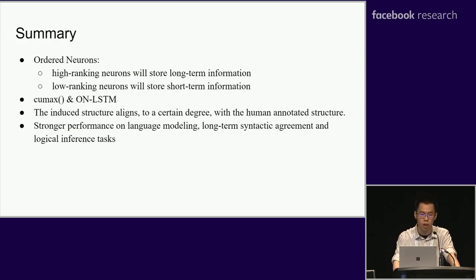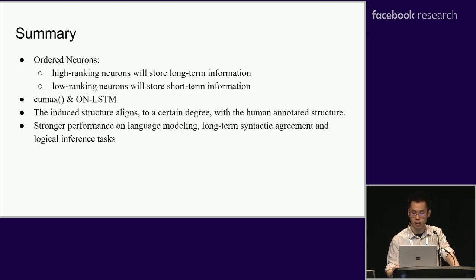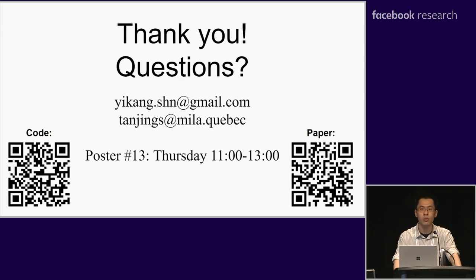To summarize our work: we propose a new order neuron inductive bias such that higher-rank neurons store longer-term information and lower-rank neurons store shorter-term information. To achieve this, we propose a new activation function Cumax and a new recurrent model, ON-LSTM. Experiment results show that the latent structure induced by our model aligns with human expert annotation, and the model achieves stronger performance on downstream tasks given those induced latent structures. Thanks for listening, and please visit our poster if you're interested.